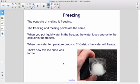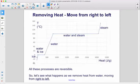The opposite of melting is freezing. The freezing and melting points are the same. When you put liquid water in the freezer, the water loses energy to the cold air in the freezer. When the water temperature drops to 0 degrees Celsius, the water will freeze. That's how this ice cube was formed.